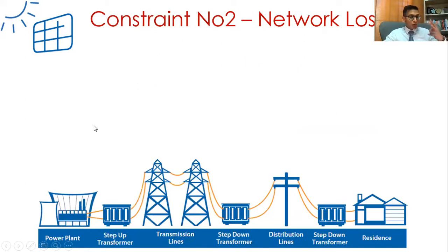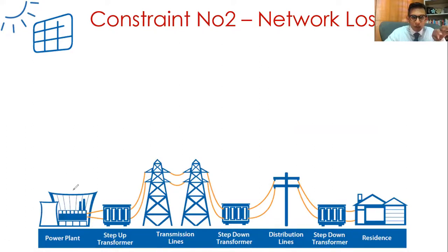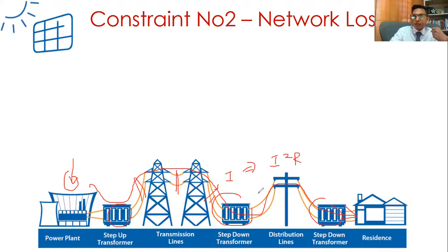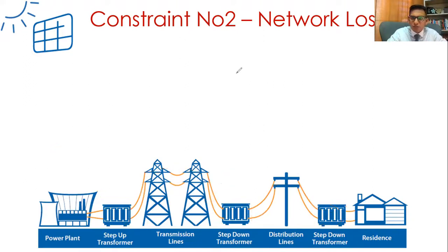Let's talk about network losses. We have the power plant on one side and loads on the other. When we have power flow, we have current flowing, and when current flows, we have what we call I-squared losses - losses in transformers and in the power lines. It is inherent to power systems. It's a key metric for power utilities to keep losses within a low range, because it is wasted energy - energy that could have been used to supply people. You can decrease network losses by using bigger conductors, better quality transformers, and so on.